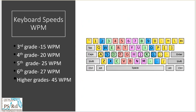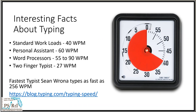The state of Utah set up standards for keyboarding for their students. The expectation for a 3rd grader is 15 words per minute, with an increase in subsequent grades. Here are some interesting facts about typing: standard workload demands about 40 words per minute, personal assistants type at about 60 words per minute, word processors type between 55 to 90 words per minute, two-finger typists average about 27 words per minute, and remarkably, the fastest typist, Sean Warnock, types as fast as 256 words per minute.